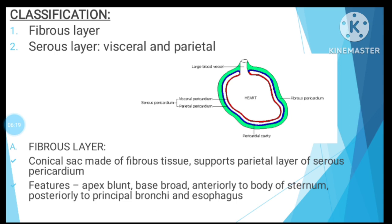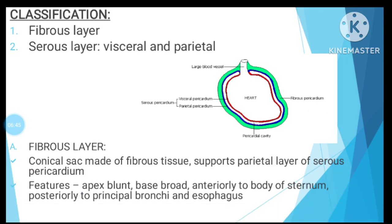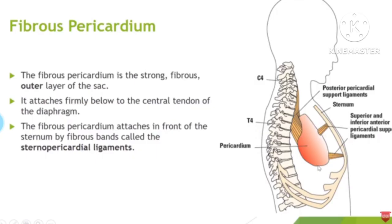The serous layer has two parts: the visceral layer covering the heart and the parietal layer forming the wall. The fibrous pericardium is conical in shape — apex blends superiorly and the base is broad inferiorly. Anteriorly it is attached to the sternum. Posteriorly it is related to the principal bronchi and esophagus. The fibrous pericardium is strong, being made up of fibrous tissue.